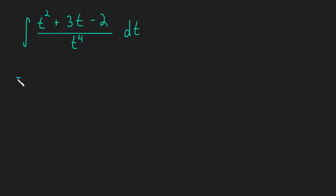So here we have an integral we're trying to find. And I'm again going to break up this fraction. So this will be t squared over t to the fourth plus 3t divided by t to the... Oh, I completely forgot the integral. Let me back up and write that in. Minus 2 divided by t to the fourth dt.